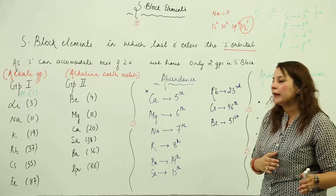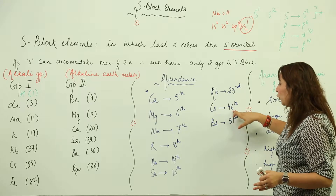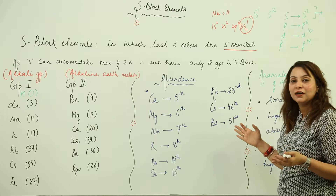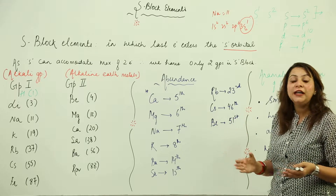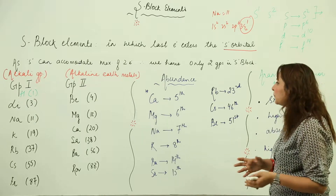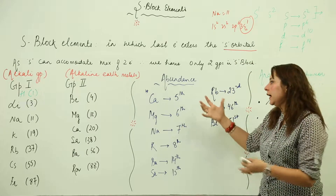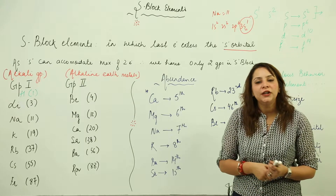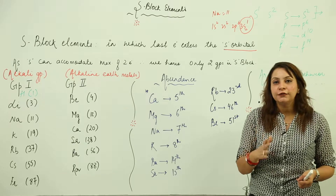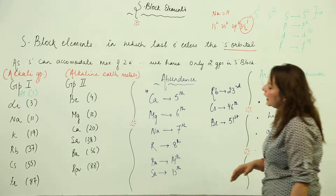Among the rarer s-block metals, rubidium is ranked 23rd, cesium 46th, and beryllium occurs only at the 51st position in terms of abundance — meaning they have very rare occurrence. Even so, all of these metals are very reactive and do not occur in nature in a free state. This is a very important point to remember.